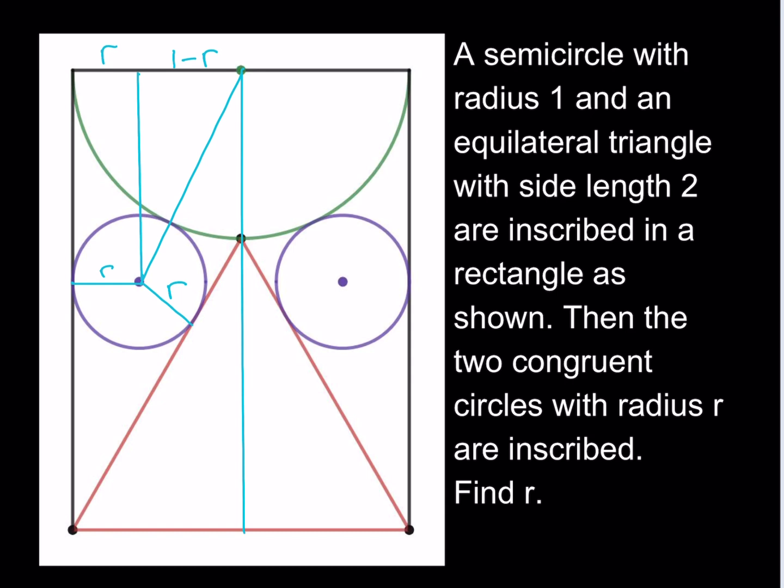So this is R, this is R, and this is obviously R as well. We do know that the radius for the semicircle is 1, so it's going to be 1 minus R. What else do we know? Well, since this is 1 and 1, this is also 1, the base is 2, the height is going to be root 3 for the equilateral. Awesome.